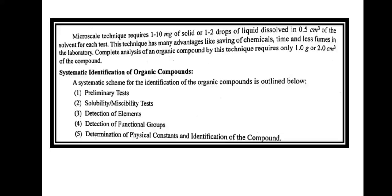Hello everyone. In this lecture I will discuss the characterization of organic compounds by microscale techniques. Microscale techniques require 1 to 10 milligrams of solid. If a compound is solid then we require between 1 to 10 milligrams, and if the compound is liquid then we will take 1 to 2 drops for analysis. This technique has various advantages as we are using a smaller quantity of chemicals, therefore there is a saving of chemicals, saving of time, and less fumes in the labs. Complete analysis requires about 1 gram of solid or a small amount of liquid.